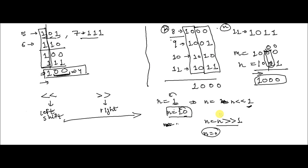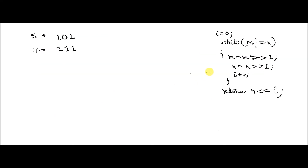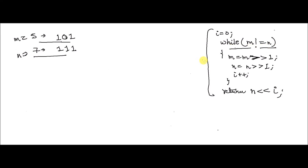Here's how we're going to do this problem. On the right I have written a small pseudocode that we will follow. These are the two numbers m and n, and we will dry run it. The loop runs while m and n are not equal. Inside the loop, we apply the right shift operator on both m and n. Doing a right shift on m and n deletes the rightmost bit — so from these values we get the shifted results.